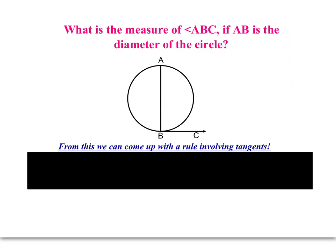So, the first example — and we've kind of talked about this in class already, so this might not be anything new. What we're interested in is: if AB is a diameter, what's the measure of angle ABC? Well, from what we've learned earlier, if that's a diameter, then this arc here — this semicircle — measures 180 degrees. And since the vertex of angle ABC is on the circle, the angle is half the arc. Since the arc is 180, the angle is 90.